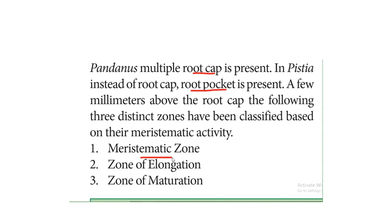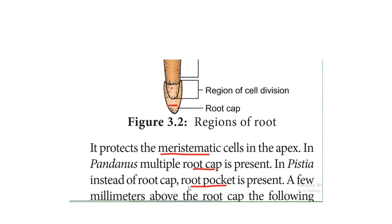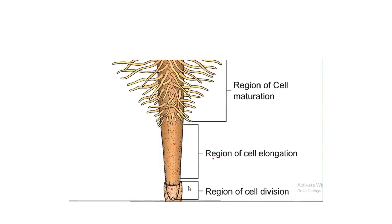Just above the root cap are three regions. The first is the meristematic zone — this is the region of cell division, where cells continuously divide. The root cap cells are also replenished from this zone.